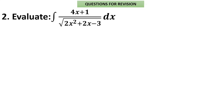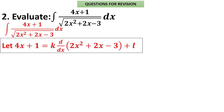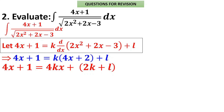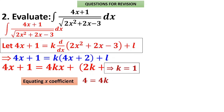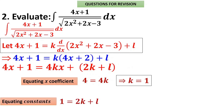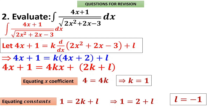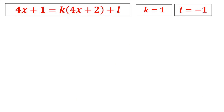Problem 2: ∫(4x + 1) / √(2x² + 2x − 3) dx. Write 4x + 1 = k · (d/dx of 2x² + 2x − 3) + l = k(4x + 2) + l. Collecting: 4kx + (2k + l). Equating x coefficients: 4 = 4k, so k = 1. Equating constants: 1 = 2k + l = 2 + l, so l = −1. Check: (4x + 2) − 1 = 4x + 1 ✓.